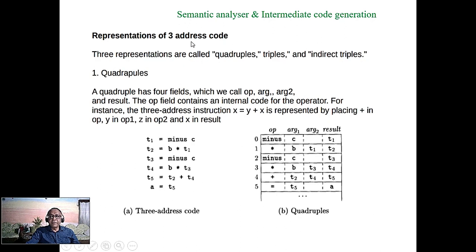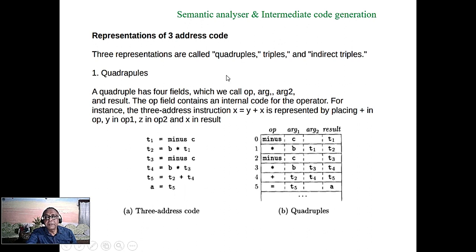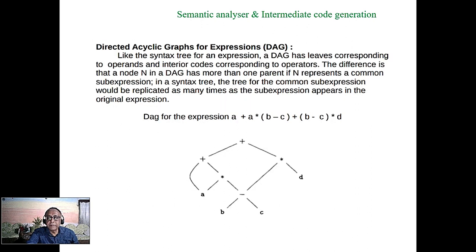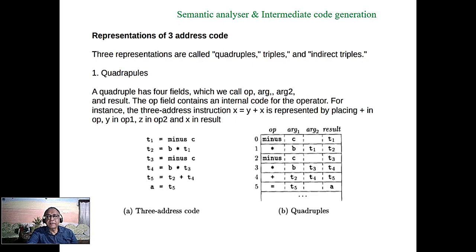In three address code representation, a unary operation is written with a temporary variable — for example, t1 = minus c. The same expression is then represented using temporary variables. Quadruples are the preferred way to implement three address code; with triples you cannot easily optimize, and there are also indirect triples. Quadruples is the preferred implementation.